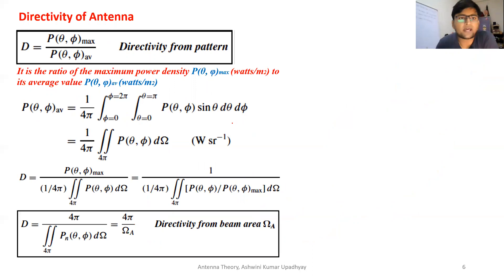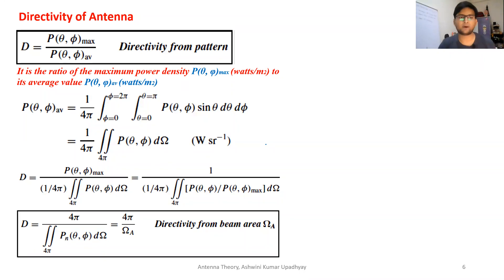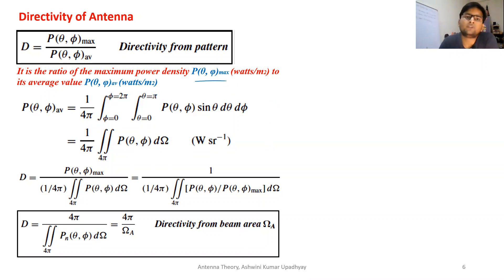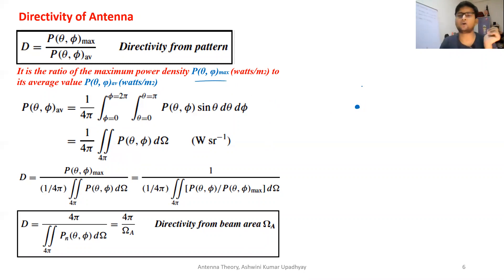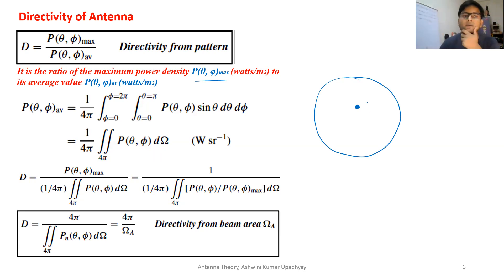Coming to the directivity of an antenna — this is the most important parameter of any antenna. It is defined as the ratio of maximum power density P(θ,φ)_max to the average value of total power density radiated. The directivity can be understood using an isotropic radiator, which is a theoretical ideal antenna that radiates equal power in all directions — its radiation pattern is an ideal sphere.